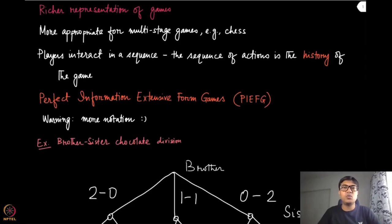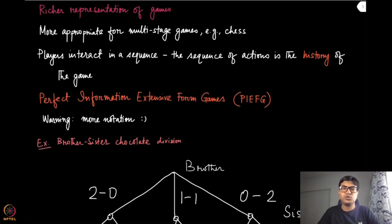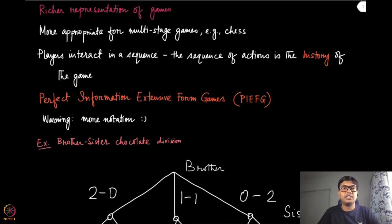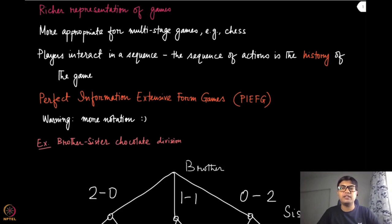So far we have discussed games which are one-shot, meaning they can be completed in one specific round. All the games we have discussed have this property that whenever the players choose their strategies, the outcome happens and that is the end of the game. But we have also seen some examples of games, for instance chess, where the players do not choose their actions all at once — the game does not end in one round. To represent games of this kind, which are sequential in nature, we need a richer representation, and that is what we are going to discuss in this module.